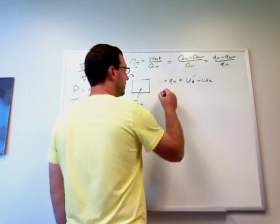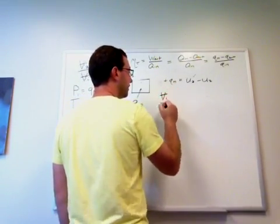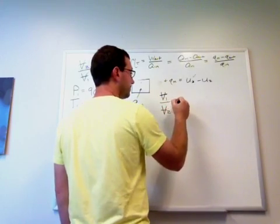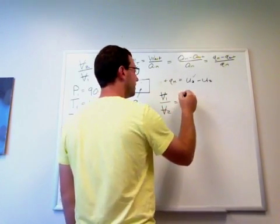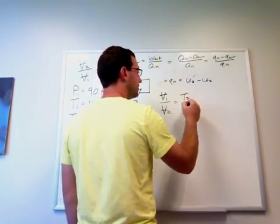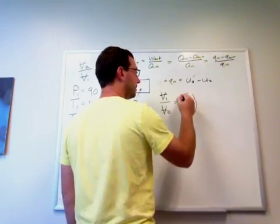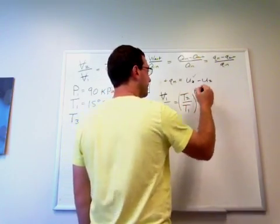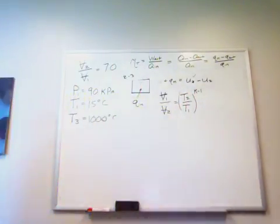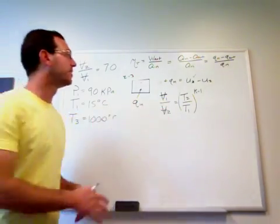One of them is something like this. Maybe V1 over V2 is T2 over T1, maybe to the K minus 1. Let me take a look at it. You could find it in the summary of Chapter 7 or the Entropy Formula Reference Sheet on the website.